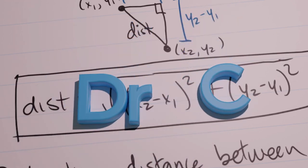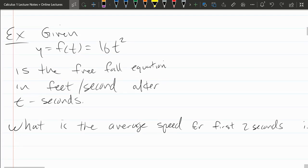We're ready for our first example here. We're given a free-fall function. This is in feet per second after the first t seconds. A lot of times you'll see a negative 16t squared because it's falling down, so the height is decreasing. If it's positive, this is just the number of feet it has fallen after t seconds.